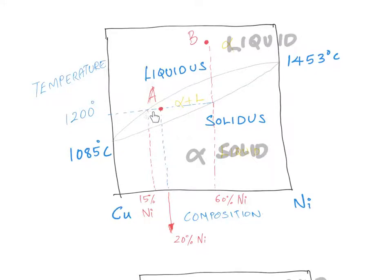Point A corresponds to two phases - both solid and liquid. The question is: what is the composition of the solid phase and what is the composition of the liquid phase? To figure that out, you draw a horizontal line called the tie line. This tie line will intersect the solidus and liquidus lines at two points. The next step is to draw perpendicular lines from these intersection points down to the x-axis.